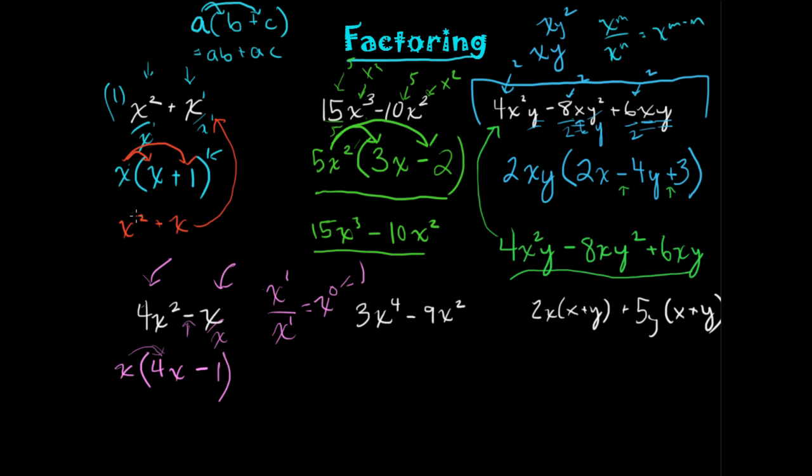Okay, so the next problem: 3X to the fourth minus 9X squared. What do these two terms in this expression have in common? A 3 and an X squared. Keep in mind that X to the fourth is really just 4 X's while this is 2 X's, so I could always factor out 2 of those X's. So 3X squared is our common factor, so we go ahead and pull that out. That leaves us with—what do we multiply 3X squared by to get 3X to the fourth? We're going to need those two other X's, so X squared. What do we multiply 3 by to get 9? That's going to be 3. X squared times what is X squared? 1. So we're going to just leave it like that.